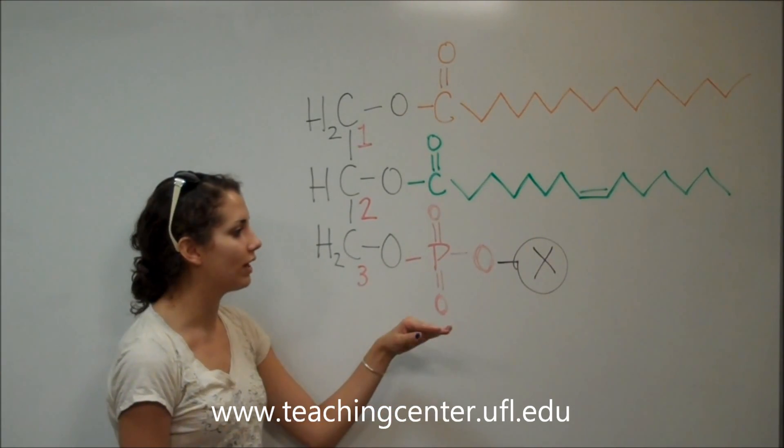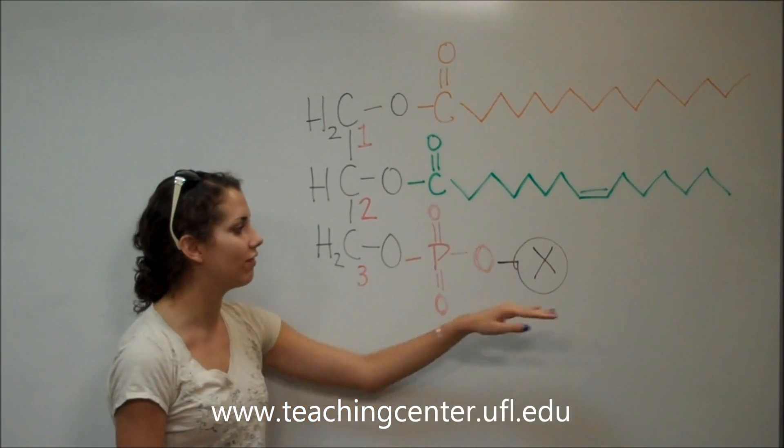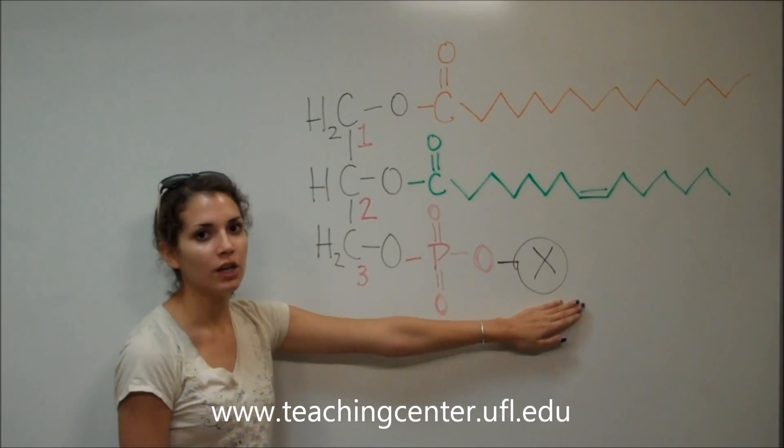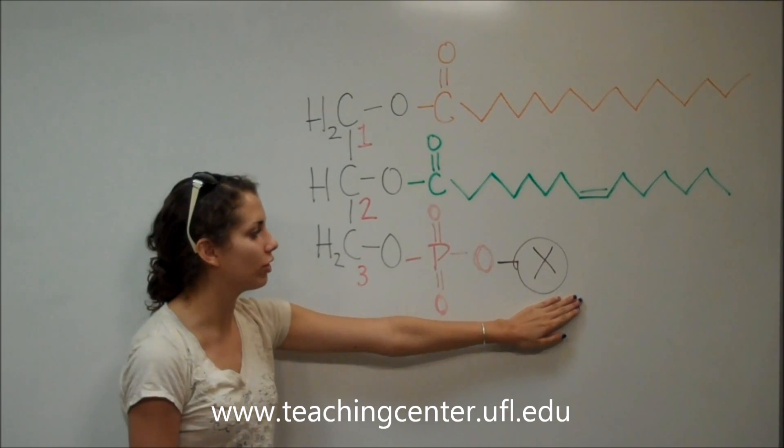At the carbon 3, there is always a phosphate group and then a variable head group. We circled where this variable group would go.